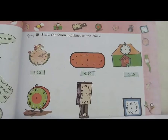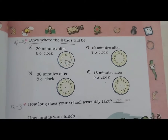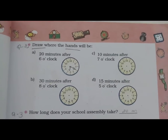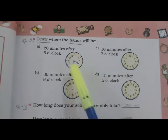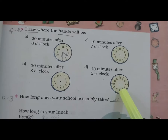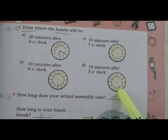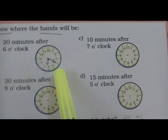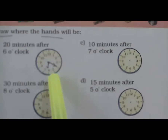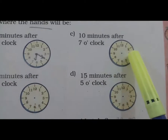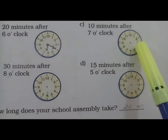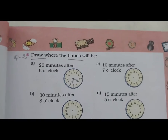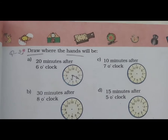Question 2: Draw where the hands will be. एक आपको यहाँ पर जो अलग-अलग clock दिये गए हैं, वो पहले आपको clock draw करने हैं, ये time लिखना है, और इसमें गड़ी में जिस तरह से draw किया है वो आपको draw करना है. तो बाकी के जो clock हैं, उसमें आपको ये draw करना है.